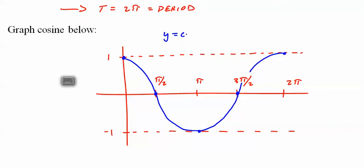That's y equals cosine of theta, or you could write it as cosine of x. It doesn't really matter, it's just a variable. We usually use theta just because we're dealing with angles and we like to be precise.